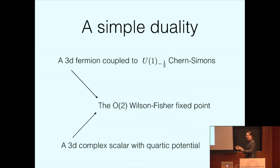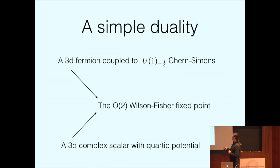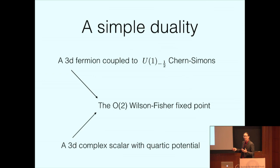This duality is a member of a very complicated network of non-supersymmetric dualities in three dimensions. It can also be readily supersymmetrized: there is an N=2 supersymmetric version where you replace the 3D fermion with a 3D chiral multiplet, matched to a free chiral multiplet. In the non-supersymmetric setup I'll use arguments like anomaly matching and RG flows; in the supersymmetric setup, exact localization calculations. Presumably non-supersymmetric statements could be derived from supersymmetric ones by judicious symmetry breaking.